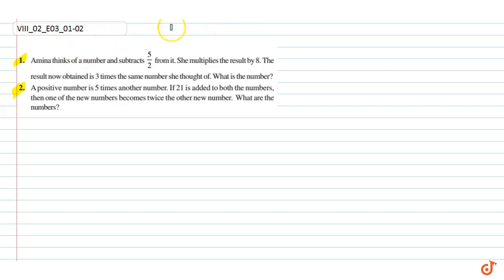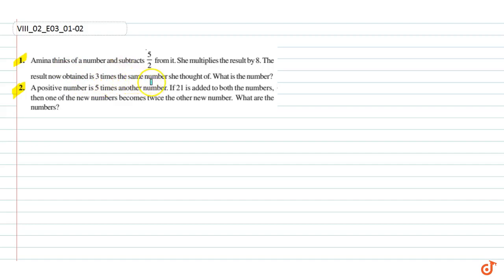In question number 1, Amina thinks of a number and subtracts 5 by 2 from it. She multiplies the result by 8. The result now obtained is 3 times the same number she thought of. So what is the number?